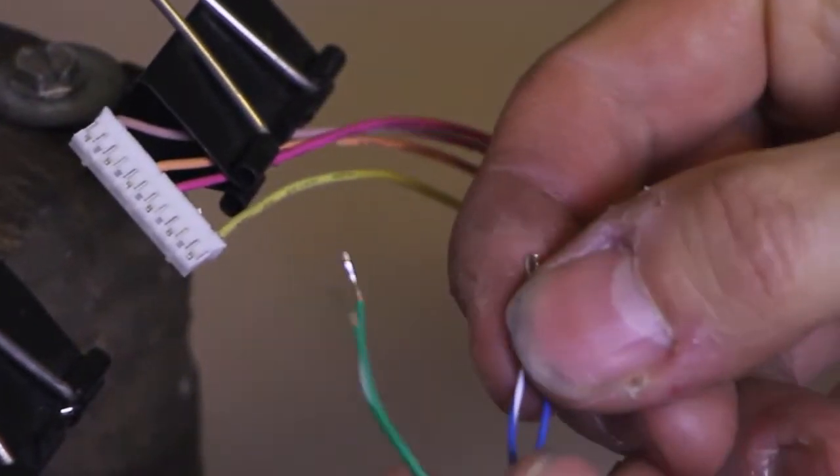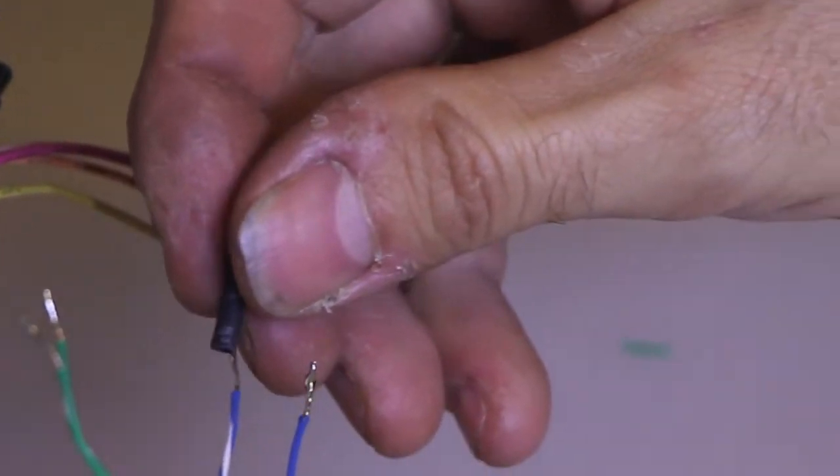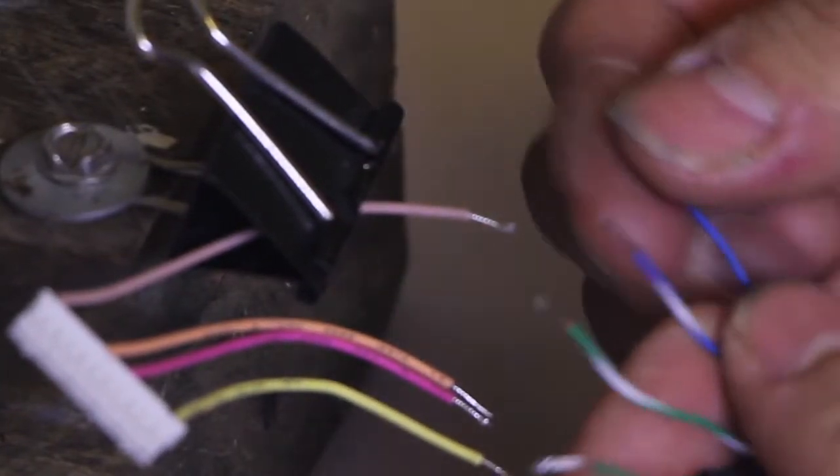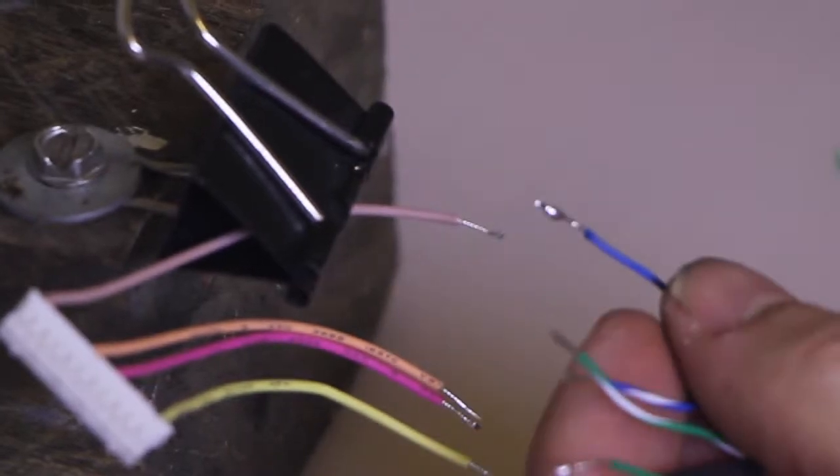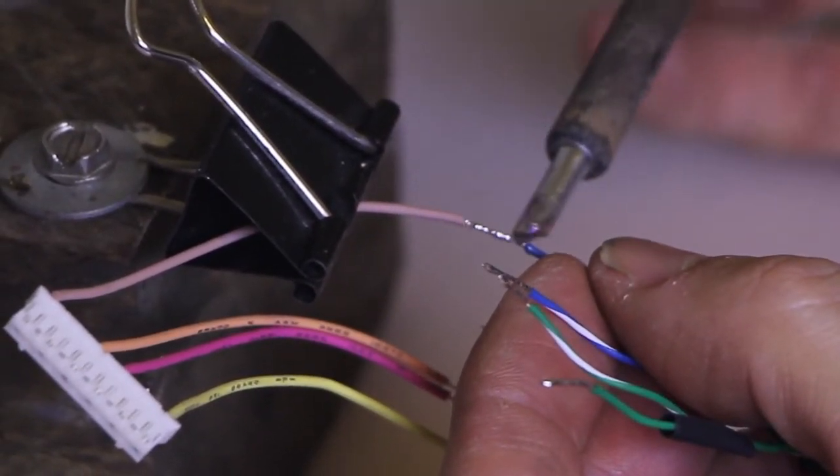Put your heat shrink over your wires. Don't forget that step, otherwise you have to desolder it again, which I do all the time. Probably safer just to do one wire, clamp one wire at a time and solder it. Doesn't matter which one you choose. Just choose a solid blue.